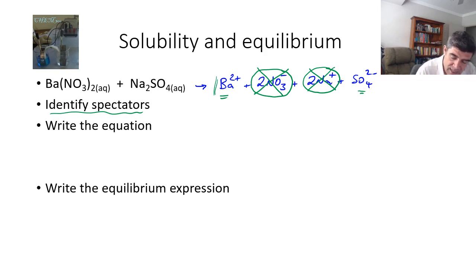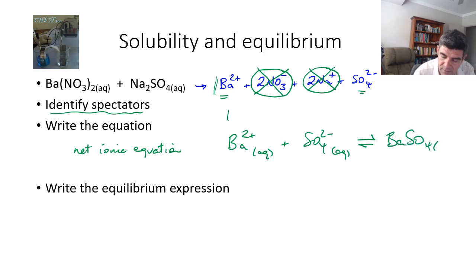So, let's write the equation then. So, now the equation is called the net ionic equation, because what we're doing with this equation is we're bringing down barium ions in solution with sulphate ions in solution. And they are forming barium sulphate precipitate, or solid. So, then we want to write the equilibrium expression. And you remember, the equilibrium expression is the concentration of the products divided by the concentration of the reactants.